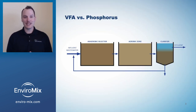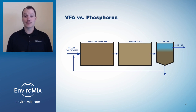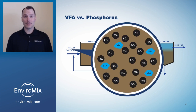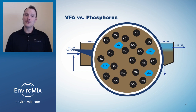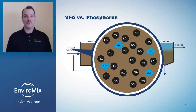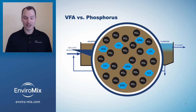The success of EBPR is primarily determined by influent wastewater characteristics, specifically the amount of VFA present in proportion to the amount of phosphorus to be removed. To avoid carbon addition, facilities with insufficient influent VFA can encourage additional VFA production through anaerobic fermentation.